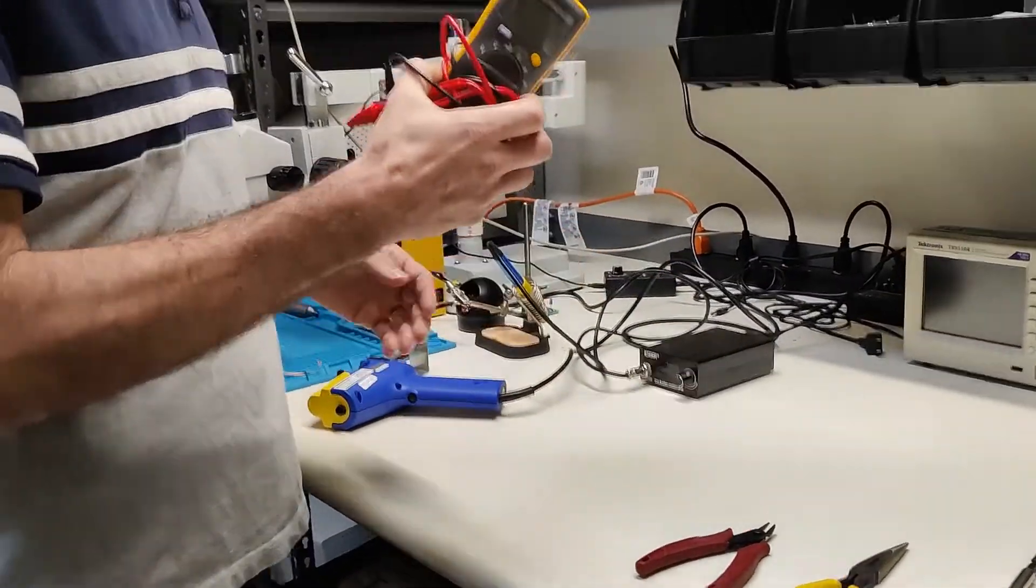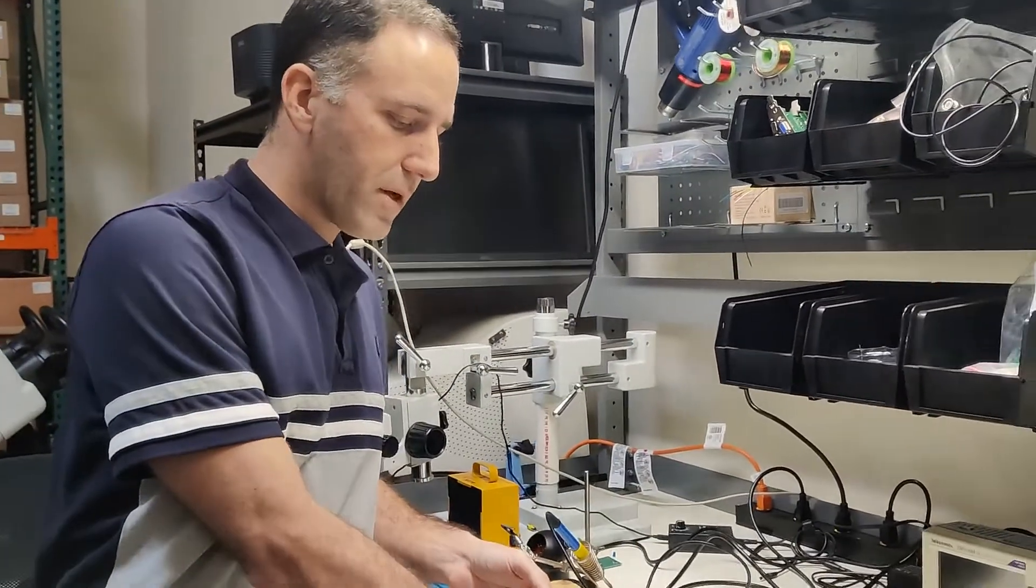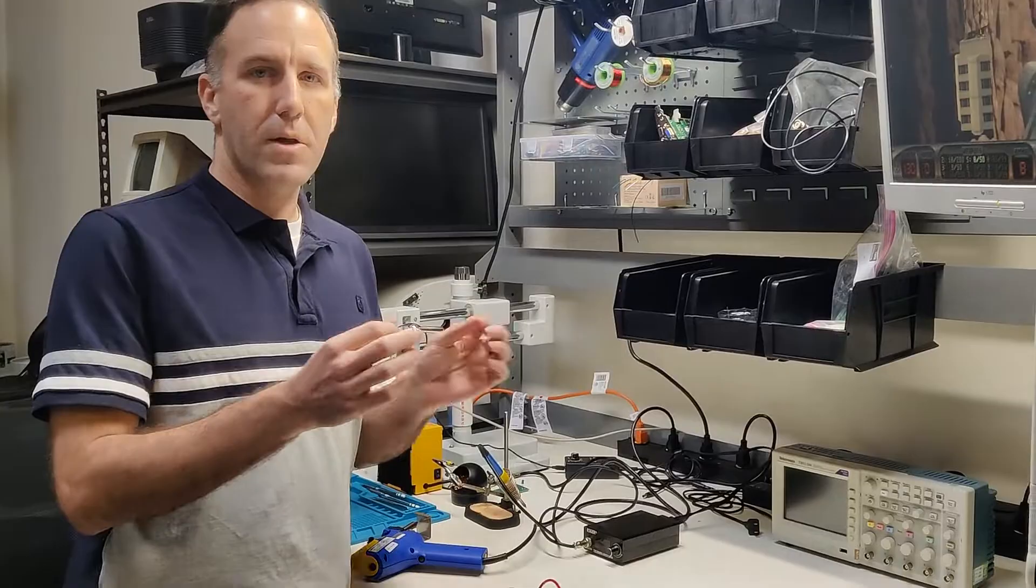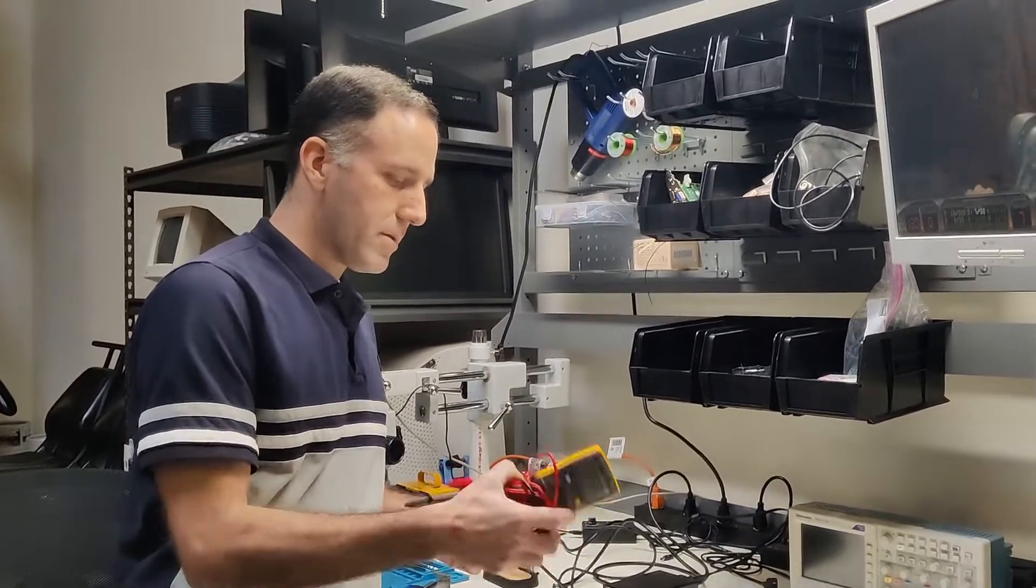Get yourself a multimeter. I like the Fluke. This is a very simple, common multimeter. It's good for checking traces in old motherboards. If there's something broken, you can check to make sure there's continuity.